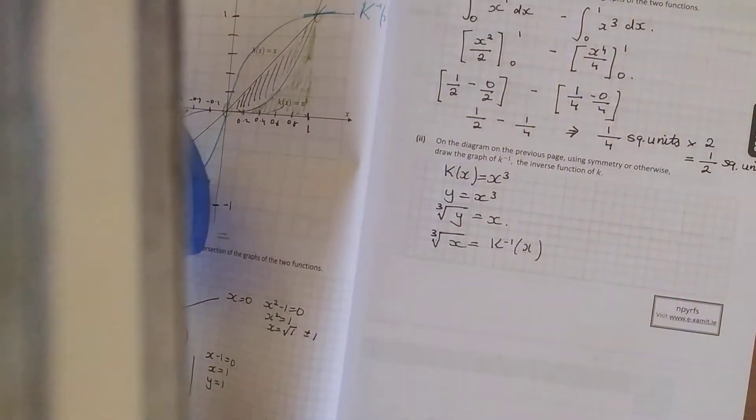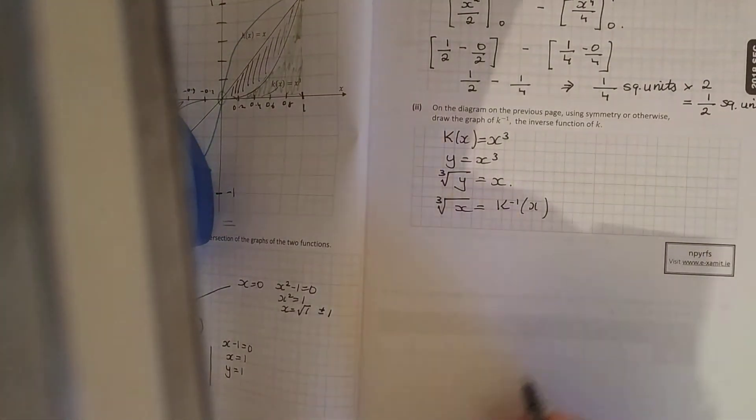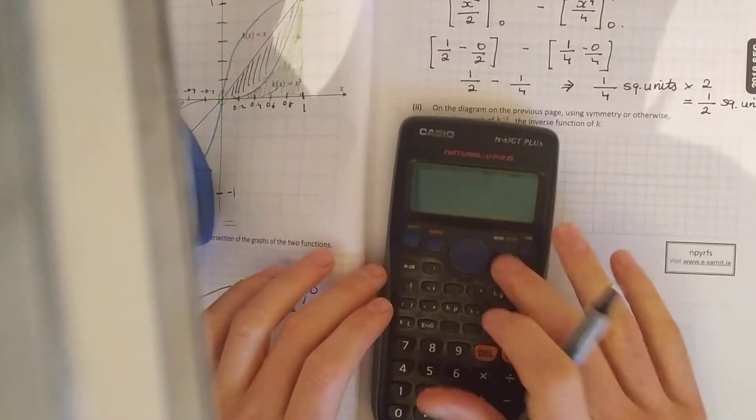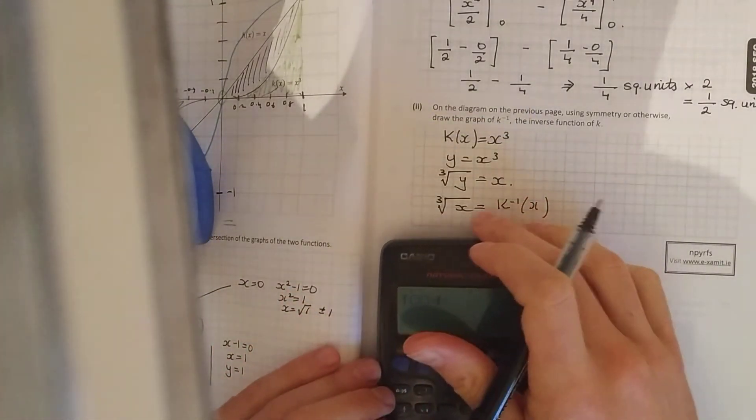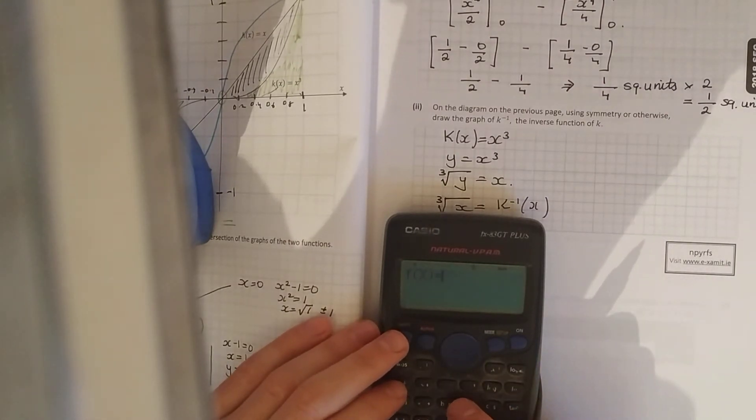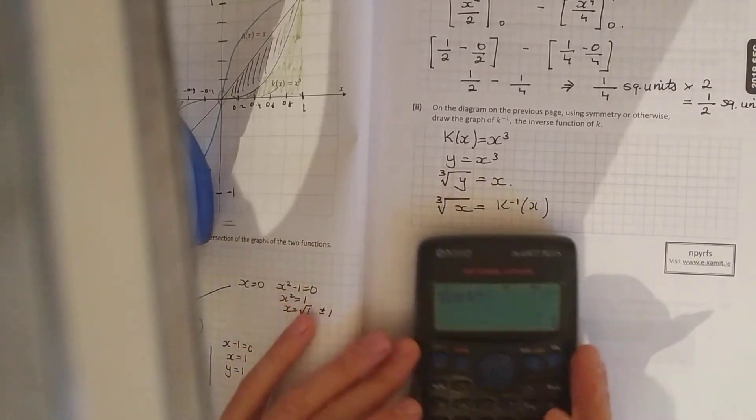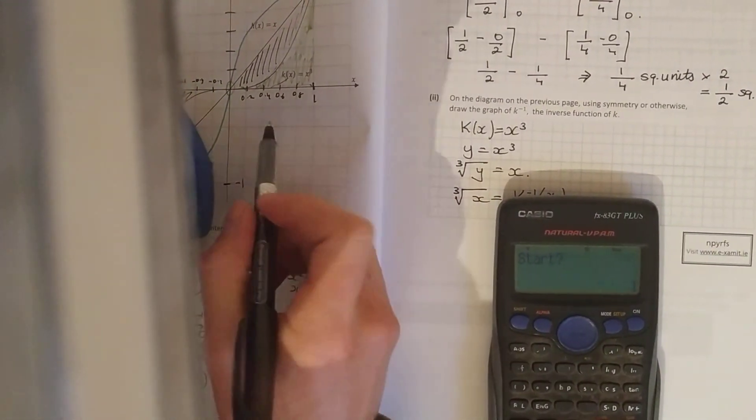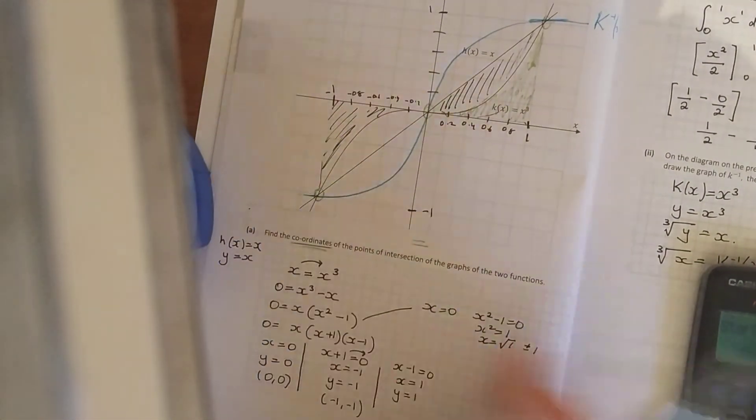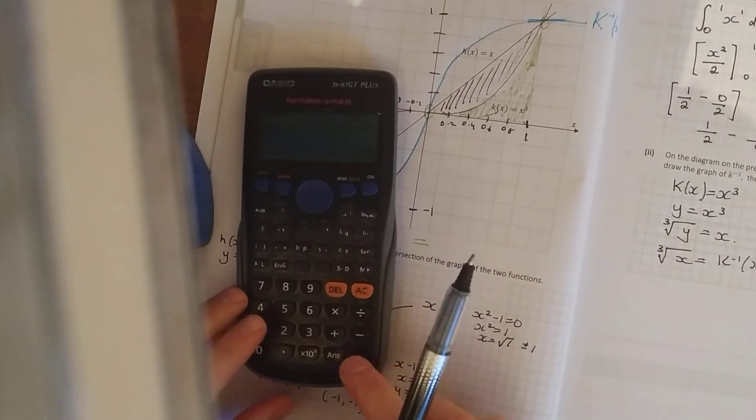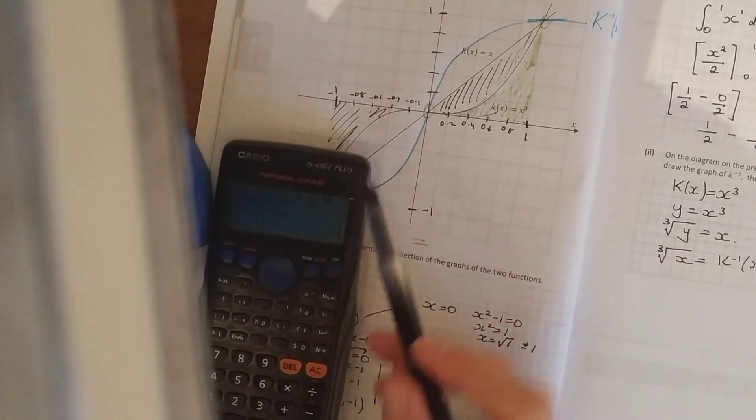And then you know how to do graphs in your calculators. Do you know that thing? Mode, 3 for table, and then you input the function. So input the function, the cube root of x, right. Start at - now what you could do there for starting, you could work with your positive values if you like or you can take them all - you're starting at -1, you're ending at 1, and they're going up in point twos.